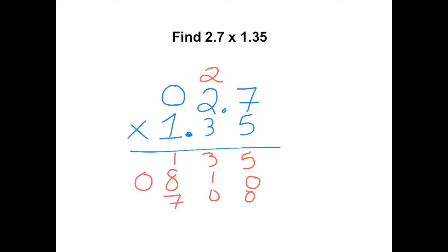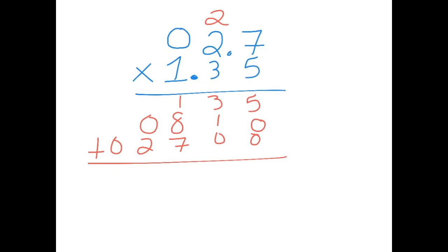1 times 7 is 7. 1 times 2 is 2. 1 times 0 is 0. And now we can add. We get 5, 4, 16, and a 3.